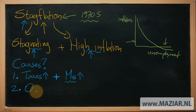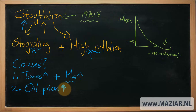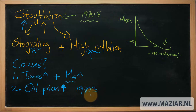A second scenario could be this: if oil prices shoot up — not just a little bit, but heavily — like what happened in the 1970s. In that period, oil prices in a very short span of time nearly quadrupled. That is a huge increase, and this will also cause a combination of stagnation and high inflation.